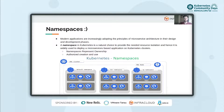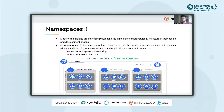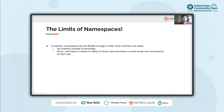Namespaces have two key properties. First, they are used to represent ownership — most Kubernetes objects such as pods and deployments must be in a namespace, so if you use a namespace to represent ownership, you can always count on there being an owner. Secondly, namespaces have authorized creation: only high-privileged users can create namespaces, while developers require explicit permissions to use those namespaces. However, sometimes namespaces are not flexible enough to meet some common use cases.